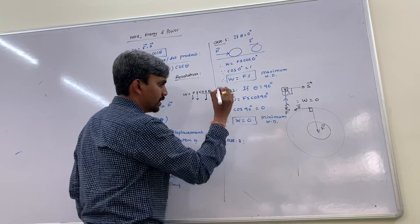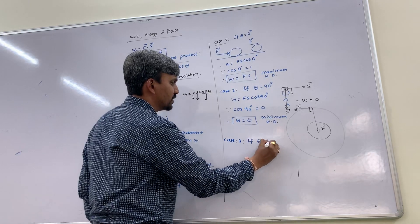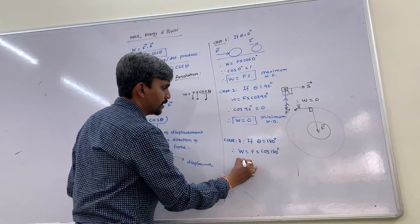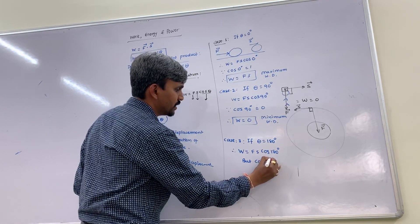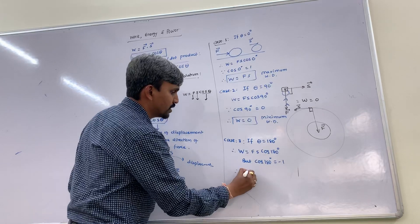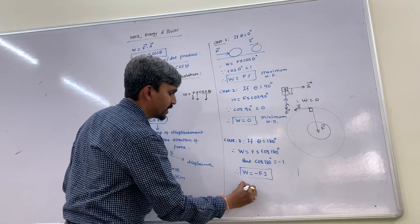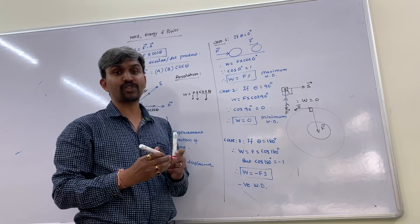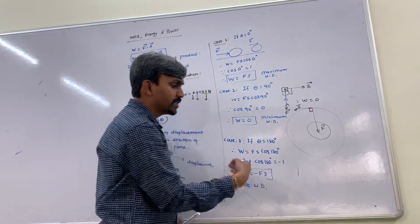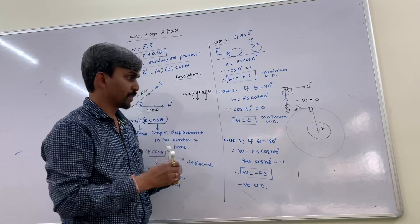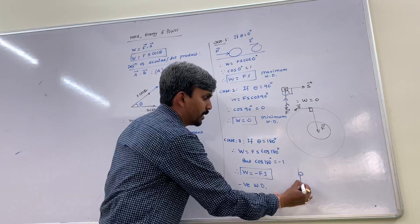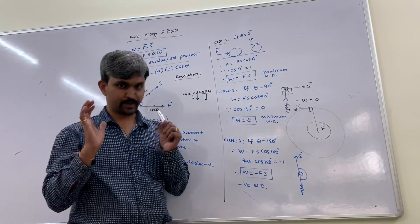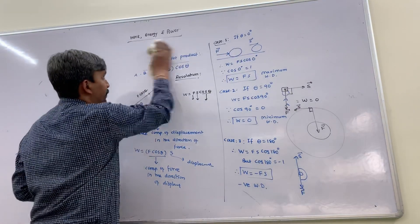Case 3: If θ = 180°, then W = F·S·cos180° = F·S·(−1) = −F·S. This is called negative work done. Examples include work done against friction — when I push a board, friction opposes the motion — and lifting an object against gravity, where the displacement is opposite to the gravitational force.